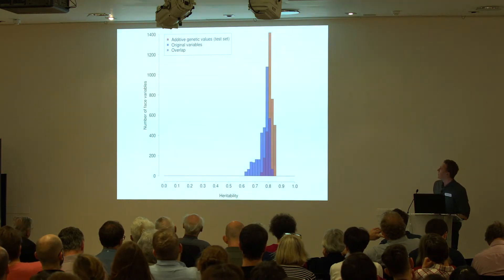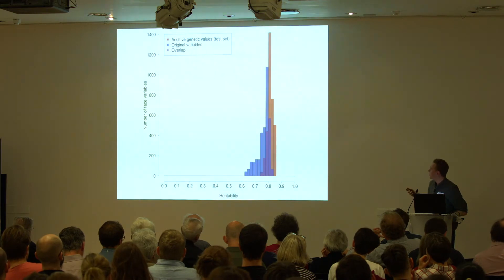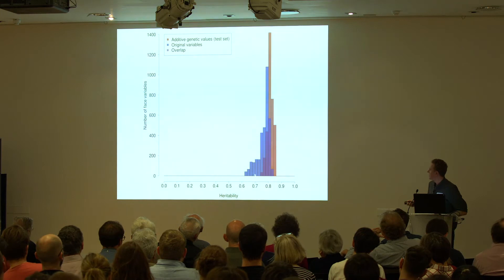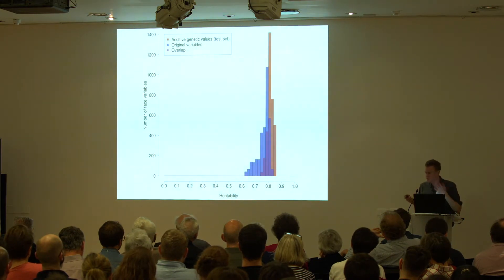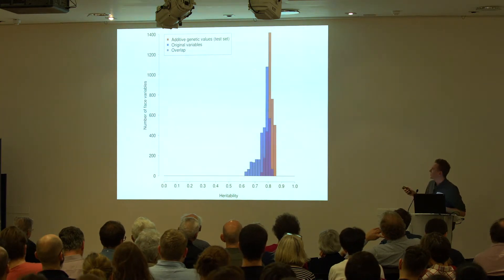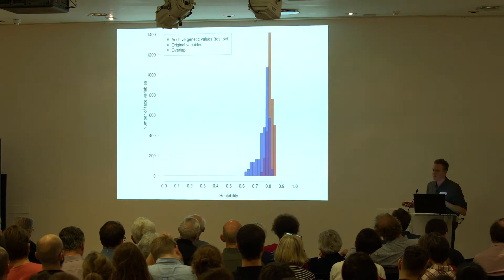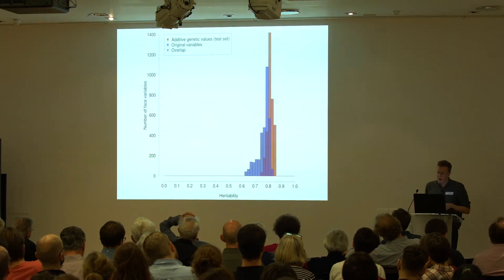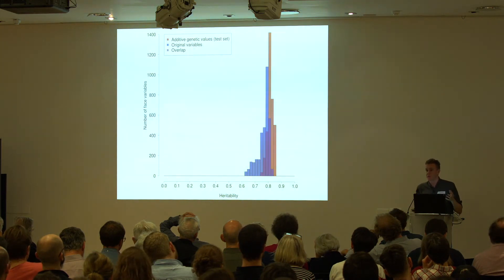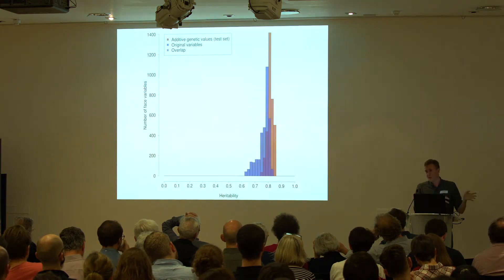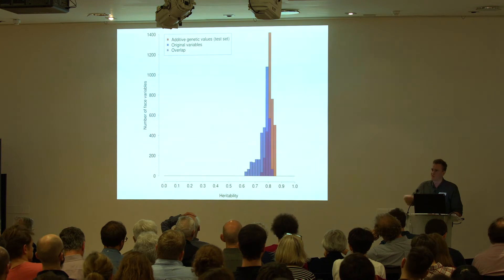The least-squares estimates for those weights theta look like this: theta is on the left, lambda is a Lagrangian parameter, the matrix in the middle is a variance-covariance matrix obtained as standard from the dataset, and on the right-hand side you have the additive genetic covariance between variable J and each other variable, which you can estimate from the twin data. In blue is the histogram of the original heritabilities, centered on around 75%. The breeding values — called additive genetic values here — are transformed versions of the same variables, shifted up in heritability and with reduced variance. Importantly, we haven't used any molecular genetic data or SNPs in doing this; it's all based on relationship data, because we're using the twin data as a replication set.